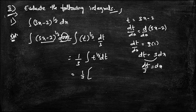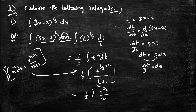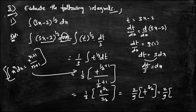Using the formula integral of x^n dx equals x^(n+1)/(n+1), we get (1/3) into t^(1/2 + 1) divided by (1/2 + 1), which is (1/3) into t^(3/2) divided by (3/2). This gives 2/9 into t^(3/2). Substituting back t equals 3x minus 2, the answer is (2/9)(3x - 2)^(3/2).